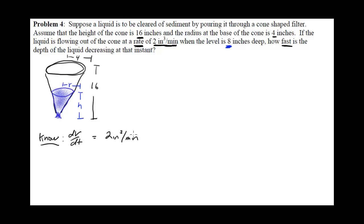There are a couple of things to clean up. It tells me liquid is flowing out at a rate of 2 cubic inches per minute specifically when the level is 8 inches deep, so I write this evaluated when h equals 8. Also, this rate would be negative — it doesn't say so in the problem, but I know it's negative because liquid is flowing out of the cone, so the volume is decreasing, meaning its derivative should be negative.